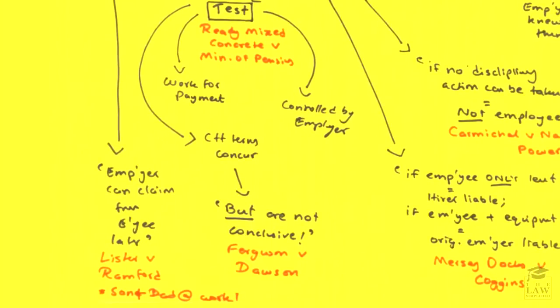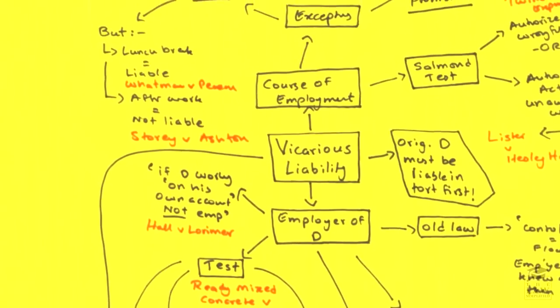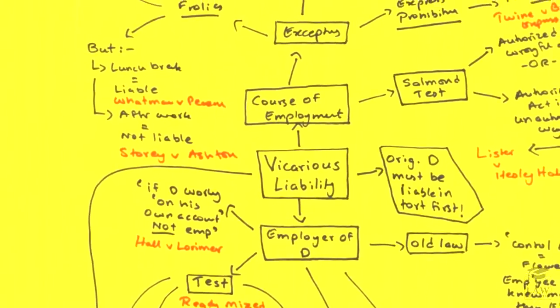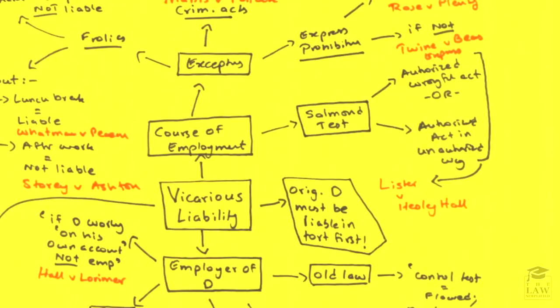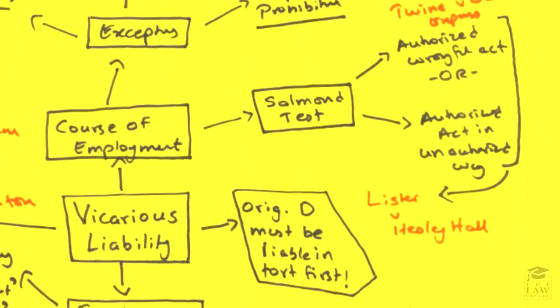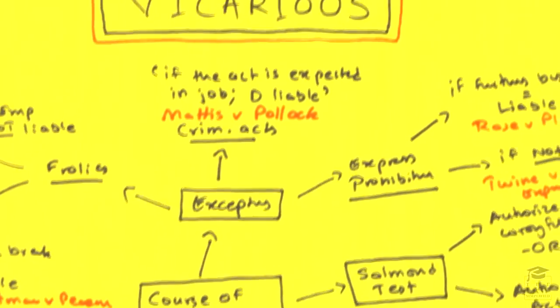The next element we have to look at is whether the employee was in the course of employment during the actual tort. The original test here is called the Salmond test and it is quite clearly outlined in Lister and Hesley Hall. What it stipulates is: if it was an authorized wrongful act, or an authorized act carried out in an unauthorized way, the employer — the defendant — would be liable. Have a look at Lister and Hesley Hall in the case summaries; it will make the Salmond test much clearer.